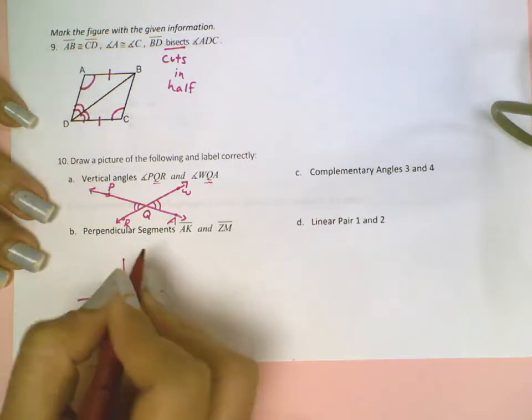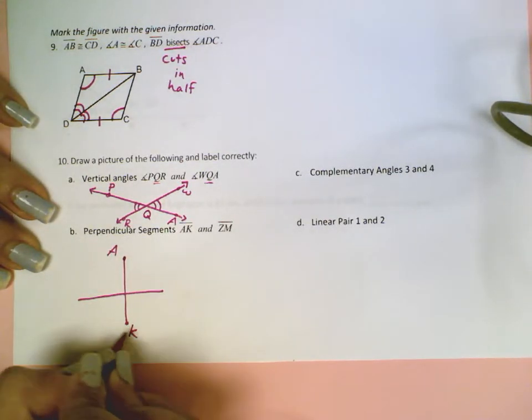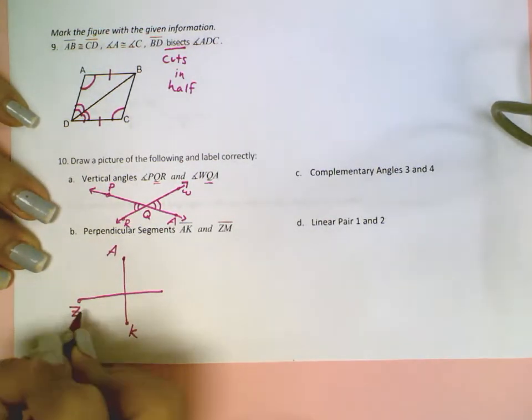So I can call this one A and this one K, this one Z, and this one M.